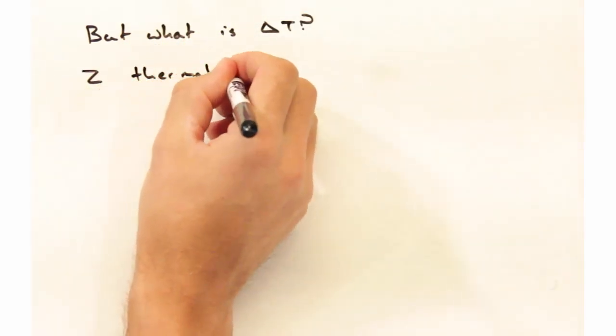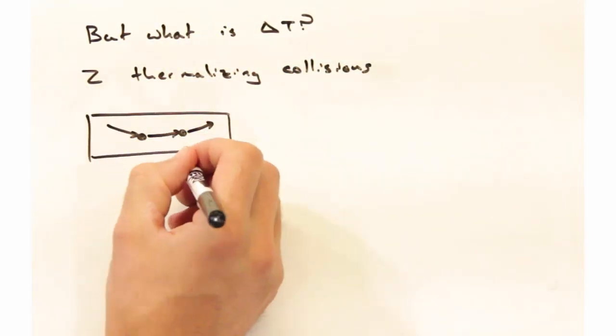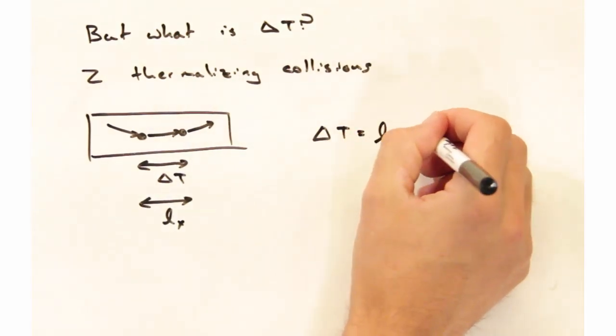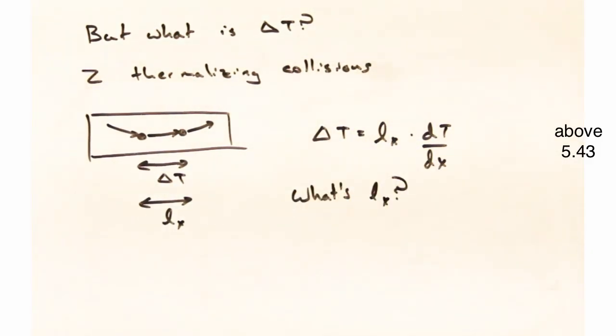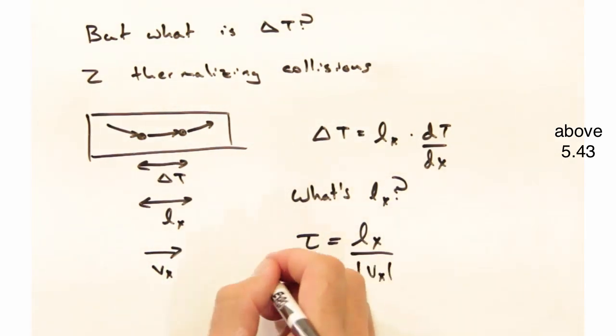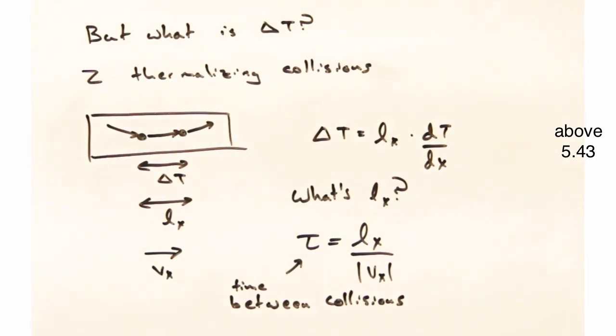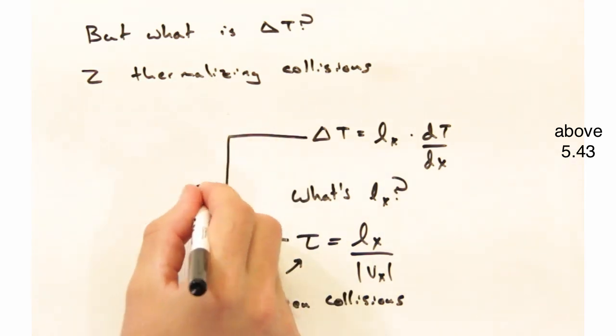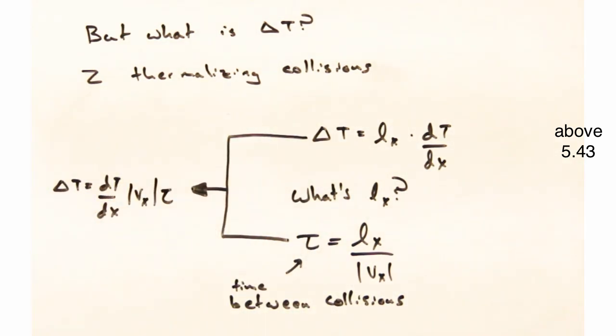This is all well and good, but we don't really have a sense of what this delta t is. We consider then two thermalizing collisions that are not at the same position in x in the sample. Particle comes in, thermalizes at t1, moves on to t2, re-thermalizes. Between these two points, we can think of a delta t. Additionally, there must be some l sub x associated with these two points. We can then write delta t in terms of this l sub x as well as the temperature gradient. It's also nice to recast l sub x in terms of the velocity in the x direction and this tau, which denotes the time between collisions. Bringing these expressions together, we can write that delta t is the temperature gradient times the velocity times your relaxation time between collisions.